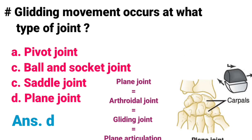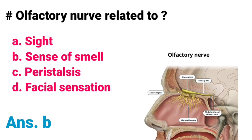Gliding movement occurs at what type of joint? A) Pivot joint, B) Ball and socket joint, C) Saddle joint, D) Plane joint. Correct answer is option D, Plane joint. The plane joint is also called an arthrodial joint, gliding joint, or plane articulation. It is a synovial joint which under physiological conditions allows only gliding movement.